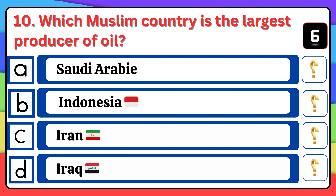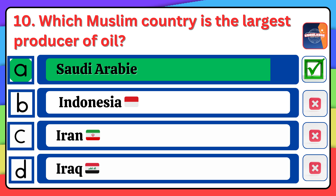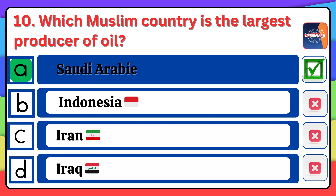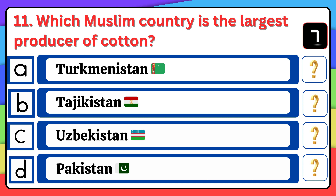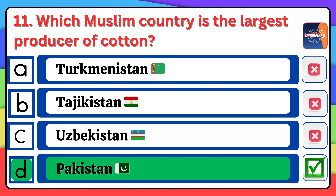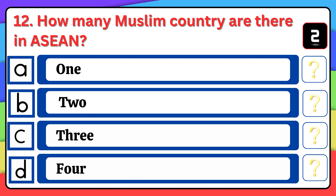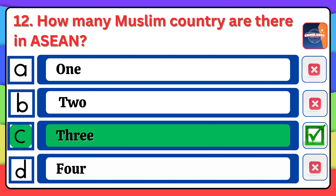Which Muslim country is the largest producer of natural gas? The right answer is option A, Qatar. Which Muslim country is the largest producer of oil? Which Muslim country is the largest producer of cotton? The correct answer is Pakistan.